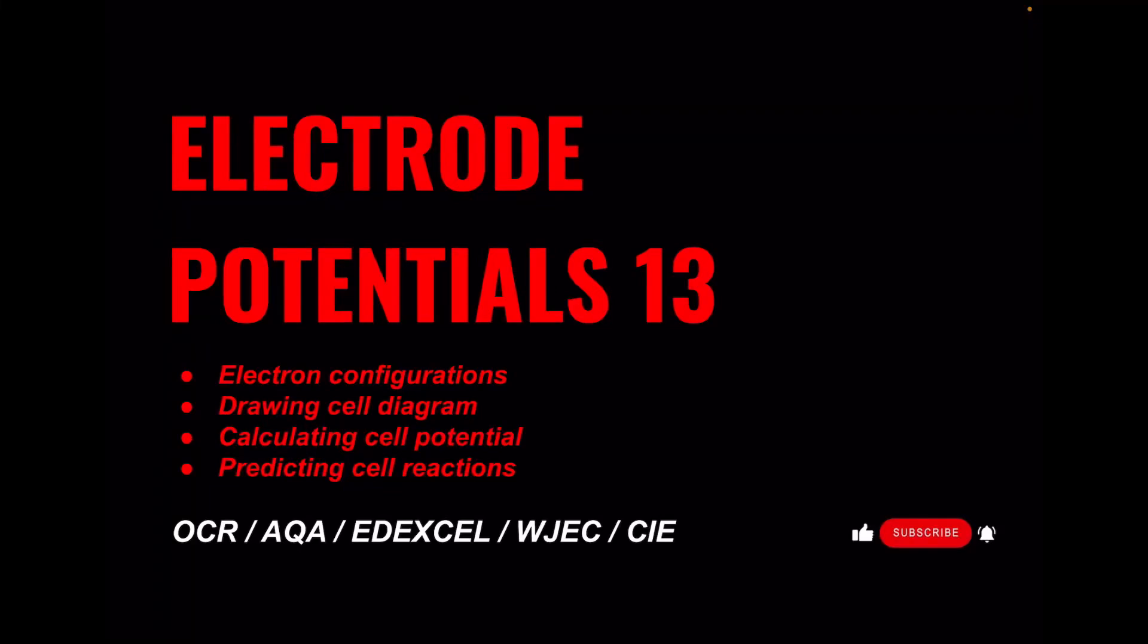I've got another exam question walkthrough for A-level chemistry, this is number 13 in the electropotentials playlist. The question deals with electron configurations, the drawing of a cell diagram, calculating cell potential, and predicting cell reactions. The video is suitable for all of the major exam boards, and I hope you like the video.